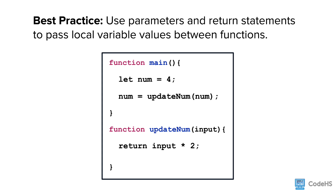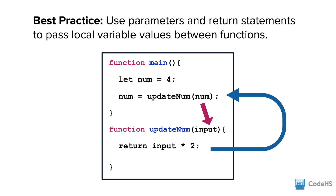Keeping that in mind, another best practice is to use parameters and return statements to pass local variable values between functions. Parameters and return statements are powerful because they enable us to pass information between functions while maintaining the scope of local variables. In this example, the num variable is local to main, but we can pass the value to the updateNum function using a parameter, then return a value to be stored back into the local num variable.